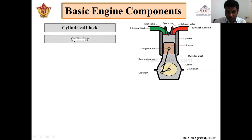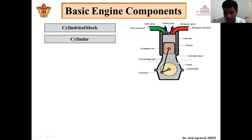Next is our cylinder. Above the cylinder block, the cylinder is attached to it. This portion is called the cylinder. It is located over the cylindrical block, and inside this cylinder the piston moves and reciprocates.